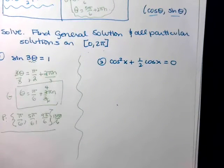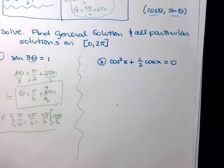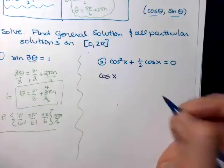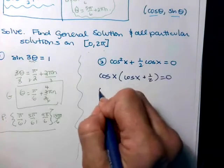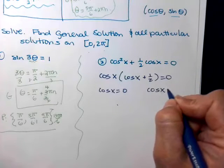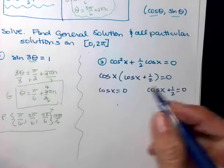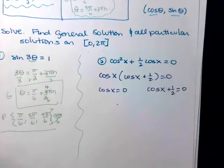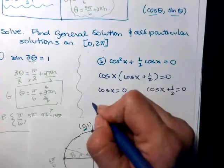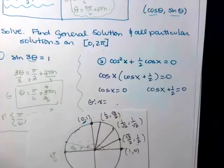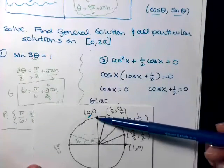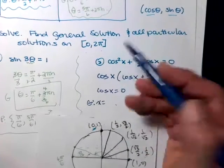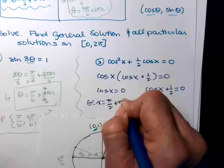Next: cosine squared x plus 1 half cosine x equals zero. Math teachers love to make students factor. We factor out a cosine x: cosine x times (cosine x plus 1 half) equals zero. I've got a product equaling zero, so we set each factor equal to zero and solve each independently. Cosine x equals zero — we can do that on our unit circle. Where on our unit circle is cosine equal to zero? It's top and bottom, so this is one where it goes back and forth by pi's.